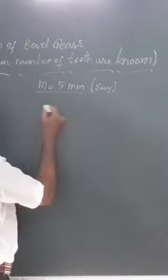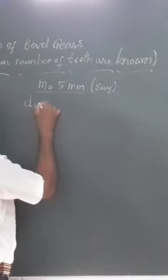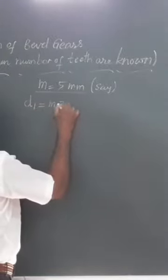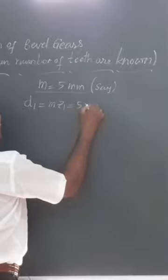With this, you can find out what is d1. d1 is equal to m × z1. m is 5, z is 21, this is 105 millimeter.